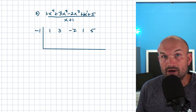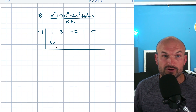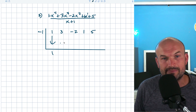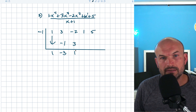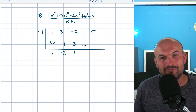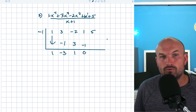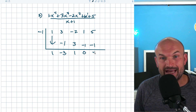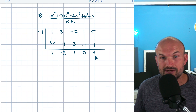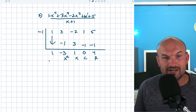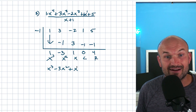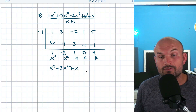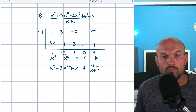Notice there's a positive one there as well. Remember the freebie always works — bring down the one. One times negative one gives negative one. Three plus negative one on the vertical gives negative three. Negative three times negative one — negative times negative is positive — gives positive three. Negative two plus three gives one. One times negative one gives negative one, and that gives me zero. Zero times negative one gives negative one. Five plus negative one gives four. So working backwards: remainder four, then no constant, linear term X, quadratic negative 3X squared, cubic X cubed. The final answer is X cubed minus 3X squared plus X, plus four over X plus one.